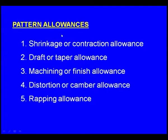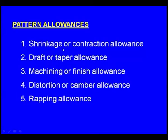Now let us see the pattern allowances. Allowances means some increment or decrement to the dimension. There are five types of allowances: shrinkage or contraction allowance, draft or taper allowance, machining or finishing allowance, distortion or camber allowance, and finally wrapping allowance. Now let us see all these allowances one by one.